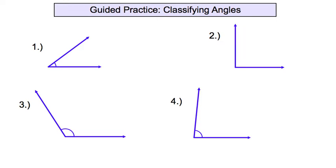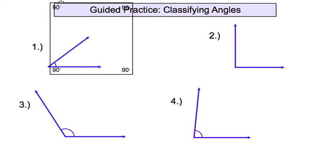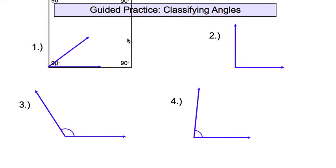Here's our first guided practice: classifying angles. Number one — what kind of angle is that? Is it acute (less than 90 degrees), obtuse (more than 90 degrees), or a right angle (exactly 90 degrees)? You can hold up a piece of paper to the screen. I'll grab a piece of paper with a 90-degree corner and line it up on the vertex. 90 degrees would be like that, and this one is definitely less than 90 degrees, so we name that angle acute.